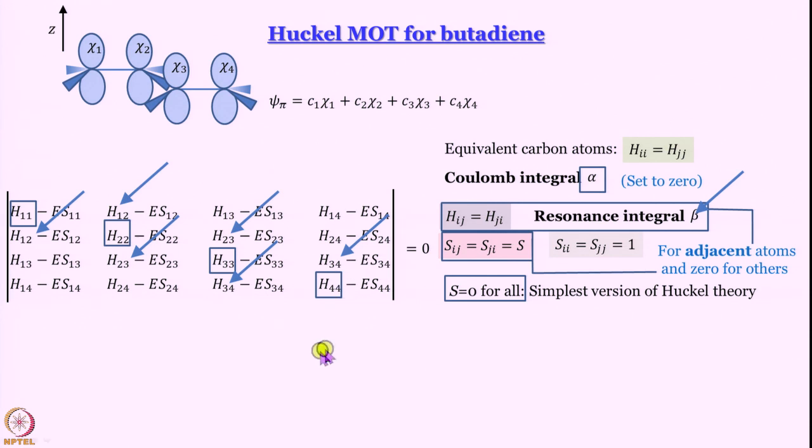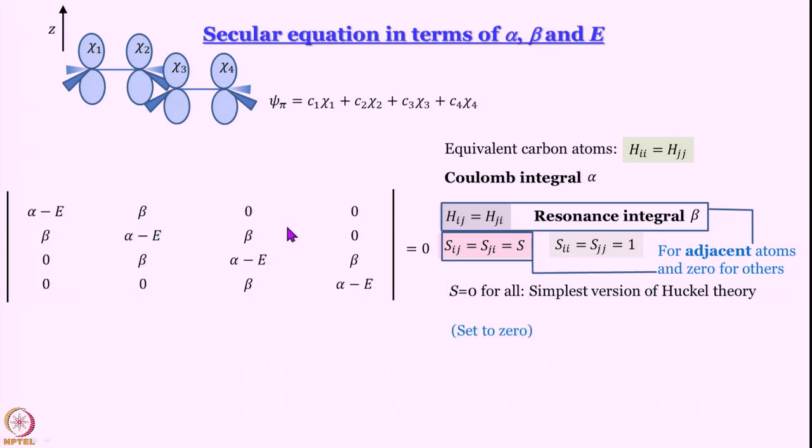Similarly, H34 also appears in 2 terms and they can be replaced as beta. So what do we have now? What is the first term here? 0 minus E. Second term is beta then 0 0. Then we have beta. Well, this is beta minus E times S12. So that is equal to beta because S12 is 0. E times S11, remember S11 is not equal to 0. S11 is equal to 1. So here I have minus E then I have beta. So this way we can keep on writing and this is what we are left with: alpha minus E, beta, 0, 0; beta, alpha minus E, beta, 0; 0, beta, alpha minus E, beta; 0, 0, beta, alpha minus E.